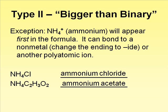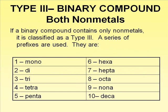Type 1 and Type 2 compounds comprise roughly 85% of the compounds that we will name. The remaining 15% or so are divided into Type 3 and Type 4. Type 3 compounds are binary compounds that contain only non-metals. Since there are not many non-metallic elements, there are not many Type 3 compounds that we will encounter.